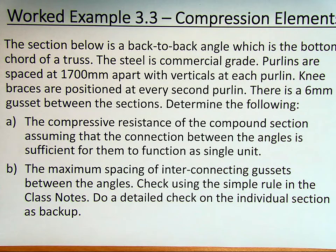Determine the following: A, the compressive resistance of a compound section assuming the connection between angles is sufficient for them to function as a single unit. And then B, which we'll do in the next video, the maximum spacing of interconnecting gussets between the angles. Check using the simple rule in the class notes and then do a detailed check on the individual section as backup.